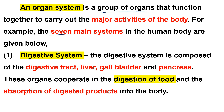The first one is the digestive system. The digestive system is composed of the digestive tract, liver, gallbladder, and pancreas. The digestive tract is also called the alimentary canal.